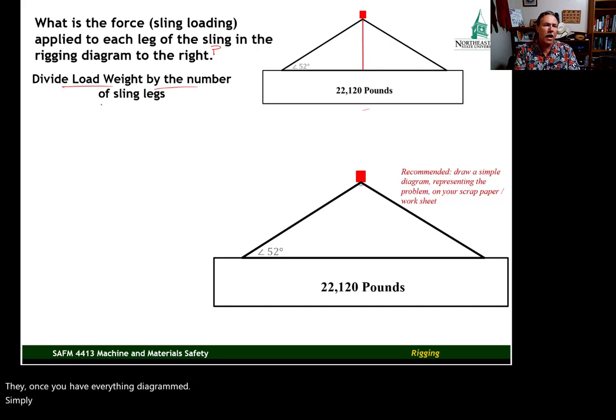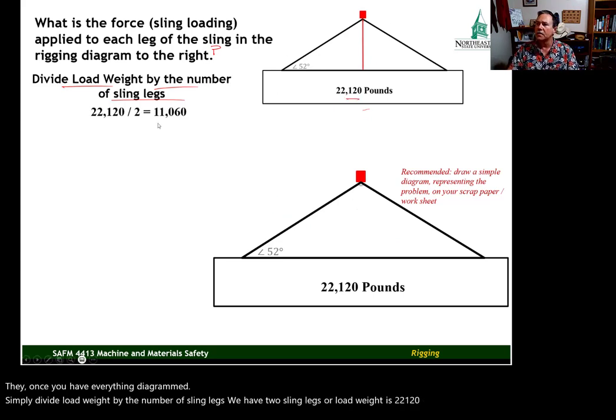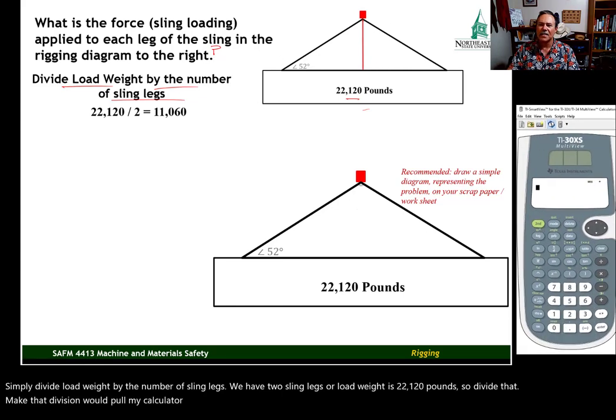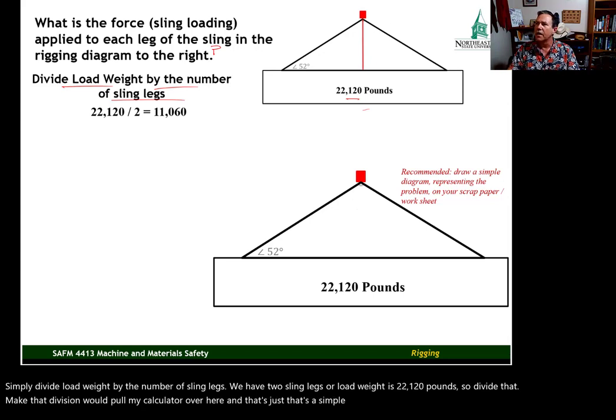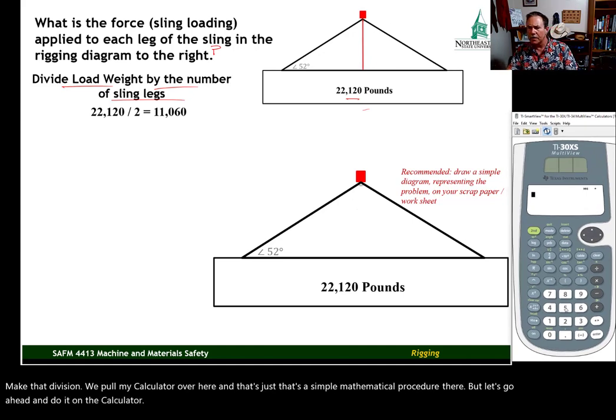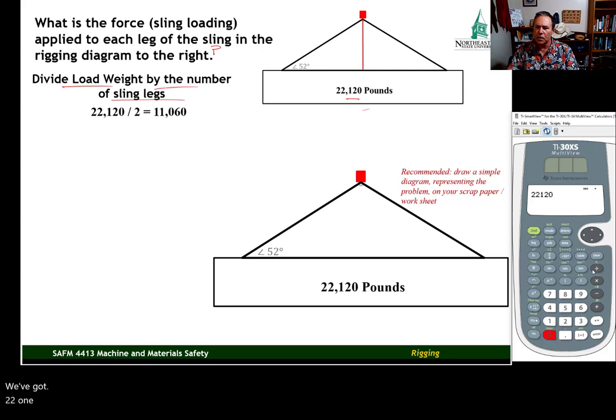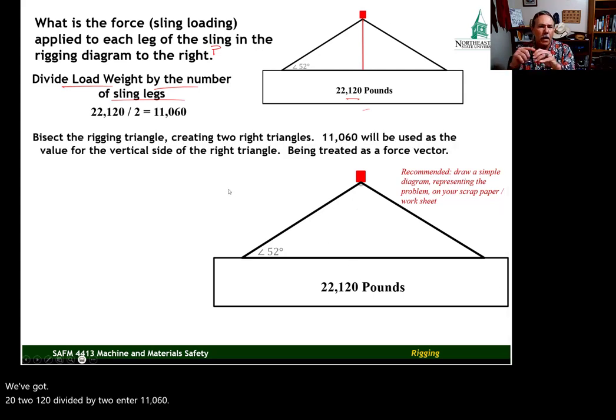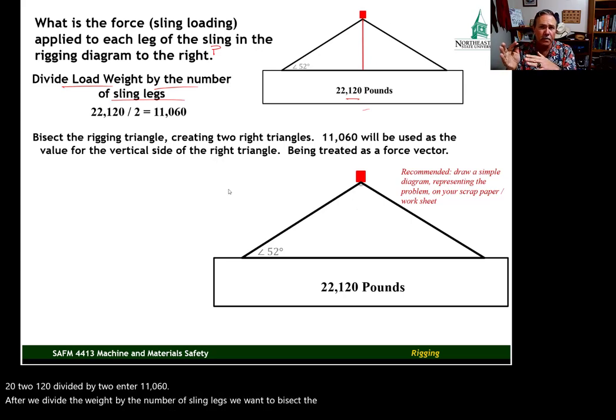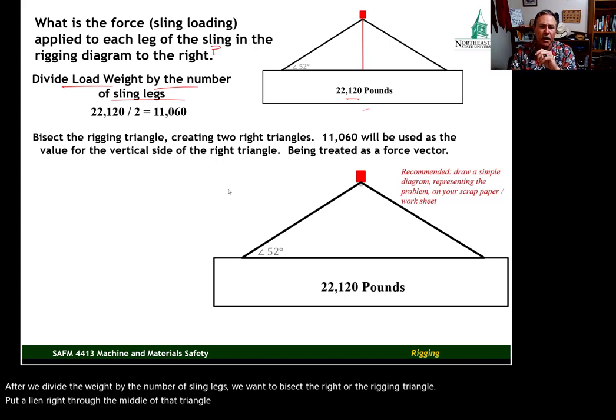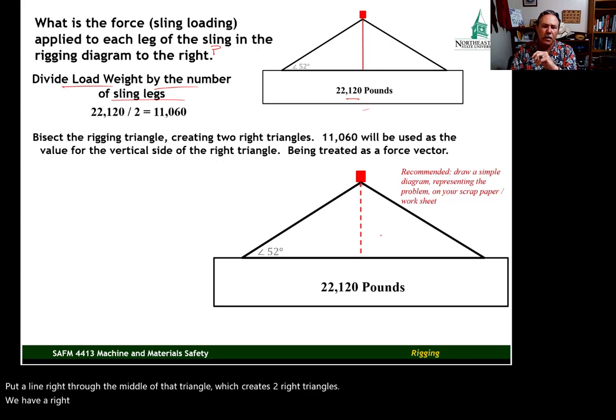And once you have everything diagrammed, simply divide load weight by the number of sling legs. We have two sling legs. Our load weight is 22,120 pounds. So divide that. Pull my calculator over here. And that's a simple mathematical procedure there, but let's go ahead and do it on the calculator. We've got 22,120 divided by 2, enter, 11,060. After we divide the weight by the number of sling legs, we want to bisect the rigging triangle. Put a line right through the middle of that triangle, which creates two right triangles. We have a right triangle over here on the left and a right triangle over here on the right. Now the 11,060, we're going to treat that as a force vector and let it represent the vertical side of the right triangle. And we're only using one of these right triangles, so we can ignore this one. We'll just work off of this one over here where we have our 52 degrees identified, 52 degree horizontal, or angle to the horizontal represented.